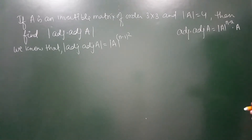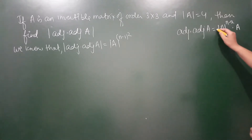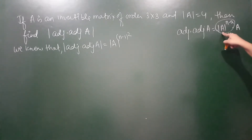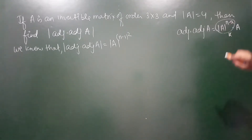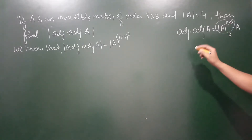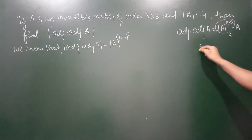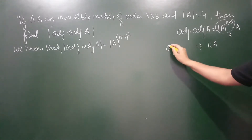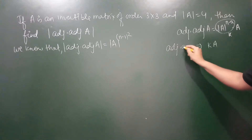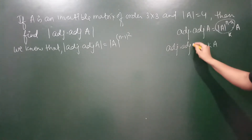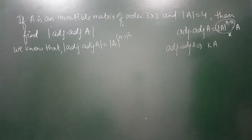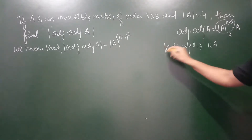तो यहीं से हम इस सवाल को proceed करें। थोड़े ध्यान से देखिए — determinant of A की power (n−2) एक scalar k है, क्योंकि यह एक value की power है, तो value ही आएगी। इसलिए हम इसको k times of A बोल सकते हैं। यहां पर हमारे पास है adjoint of adjoint of A, दोनों matrices equal हैं।